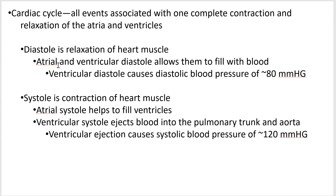The cardiac cycle includes atrial contraction, relaxation, ventricular contraction, and relaxation. The technical term for relaxation is diastole, and the technical term for contraction is systole. Usually they refer to the ventricles. So if you hear of systolic blood pressure and diastolic blood pressure, those refer to systole of the ventricles and diastole of the ventricles, though both can contract and relax.